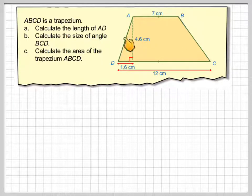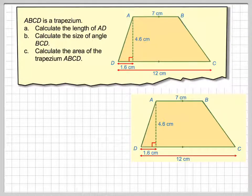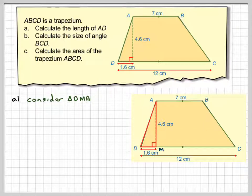So it says calculate the length AD, which is this length here. To do that, we're going to consider this triangle here. We're going to call this point M. So we're going to consider this red triangle here.